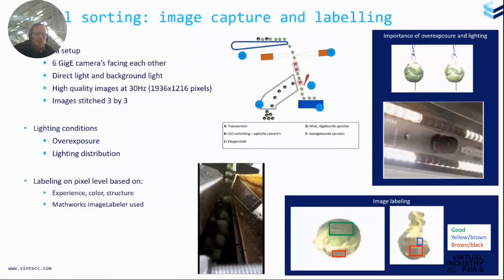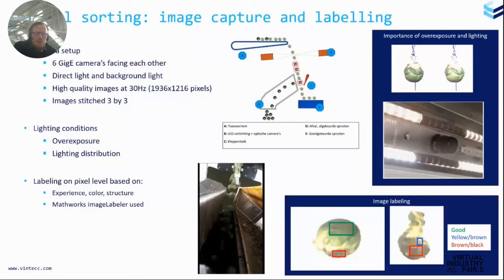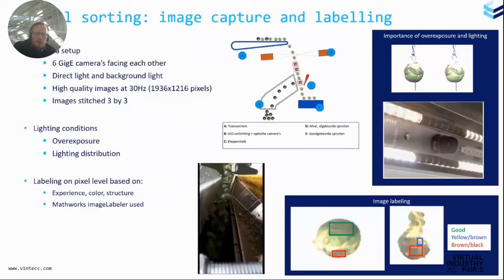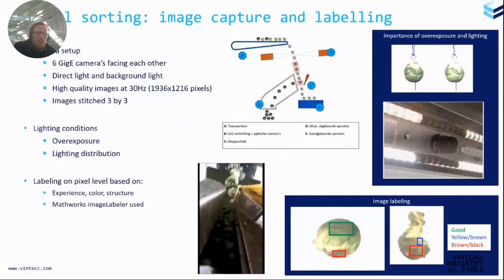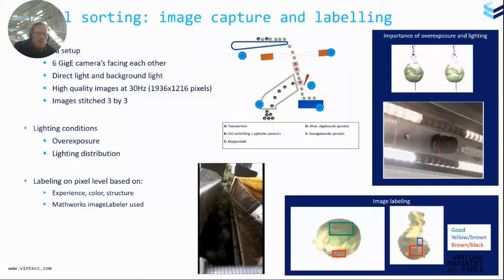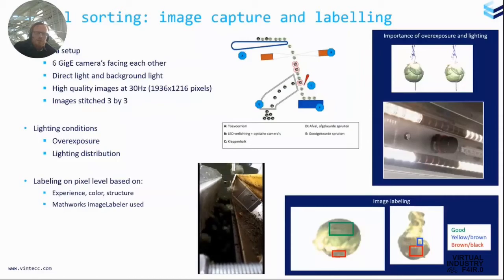So that brings us to the next steps. You need to label those images. So we have chosen here to do a pixel labeling. So we made three categories. We made good pixels. So these are pixels that were saying that part of the sprout is good. The yellow pixels, yellow or brown pixels that were more like a separation parameters to have, for example, yellow leaves so that you could detect yellow leaves because some customers wanted to get them out. And also the brown black parameters, so more the rotten parameters show that all these pixels, we could categorize them as rotten.